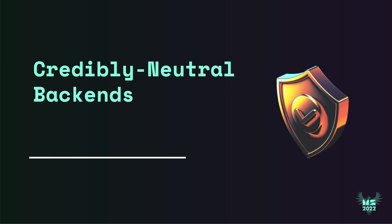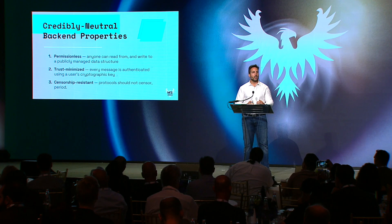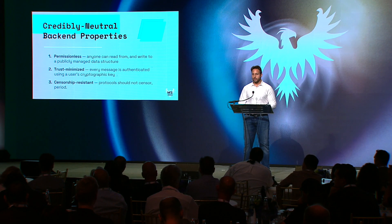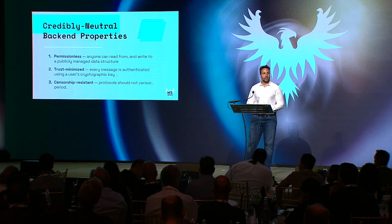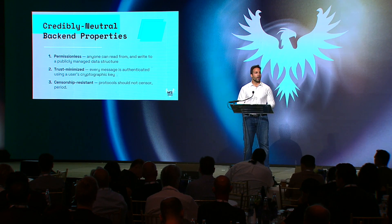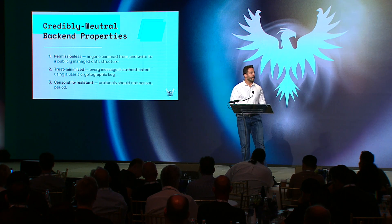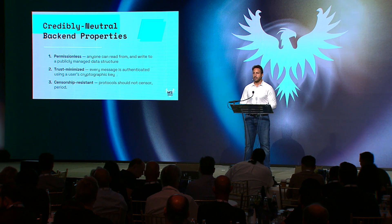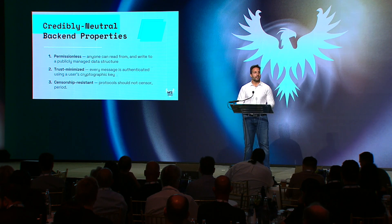That was leading-edge design pattern number one. Next up, we're going to get into credibly neutral backends. What is a credibly neutral backend? It's a backend system with three properties: it needs to be permissionless, meaning anyone needs to be able to read from or write to that data structure; it needs to be trust-minimized, meaning every message needs to be authenticated using a user's private key; and it needs to be censorship-resistant. The implications of these systems will be two things: first, the separation of frontends and backends; and second, the rise of new business models based on the fact that there will be many different frontends hooking into a common and shared backend.